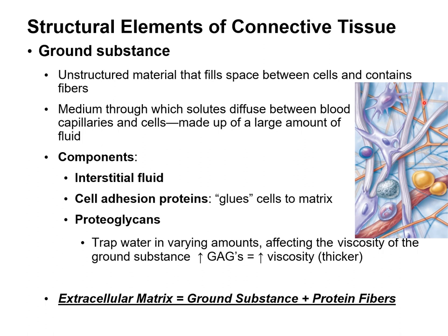There's also a background fluid — a gel-like substance that we call ground substance. What I went through in this picture we can define with this equation: the extracellular matrix, which is the space between the cells, equals the ground substance — the gel-like soup — plus protein fibers, these thread-like or string-like structures.